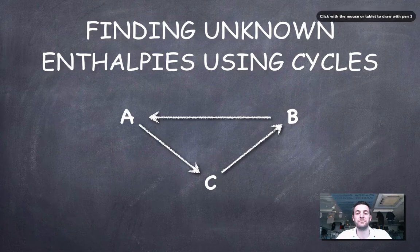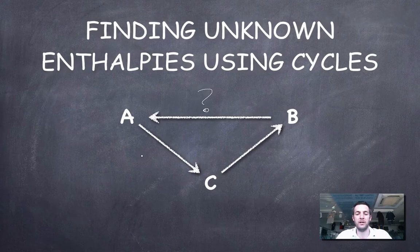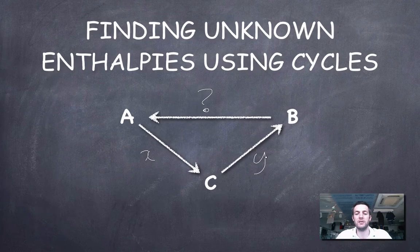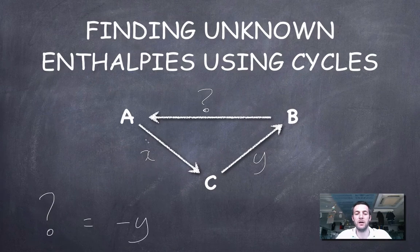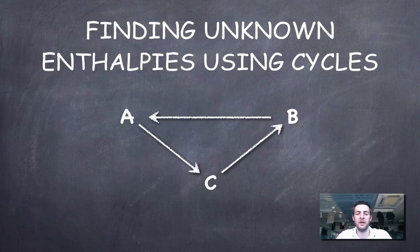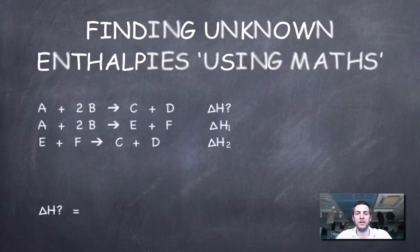Let's do one last example using a cycle: finding the enthalpy change going from B to A, where I know A to C and C to B. To go from B to A, I have to go from B to C first and then to A, so I'm going against Y and against X — doing both in reverse. The unknown enthalpy change is therefore minus Y plus minus X, which equals minus Y minus X.